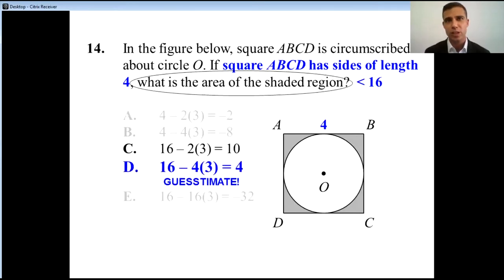Guesstimate helps eliminate answer choices that are completely impossible and helps us get down to a rough approximation that makes this question one that is going to be solved easily by students, even those that forget how to solve directly for a shaded area.